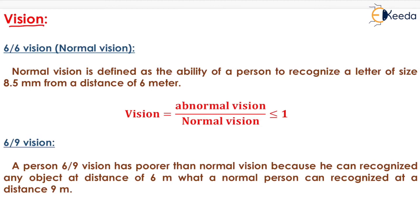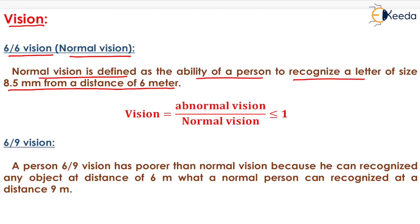The first vision type is 6/6 vision, known as normal vision. Normal vision is defined as the ability of a person to recognize a letter of size 8.5 mm from a distance of 6 meters. The ratio of abnormal vision to normal vision is less than or equal to 1.